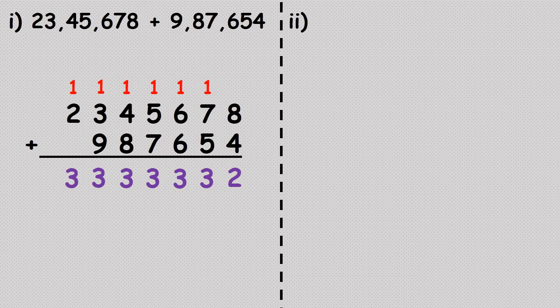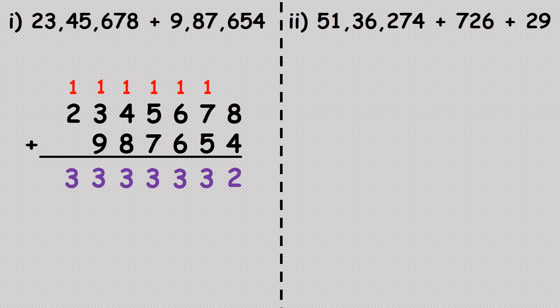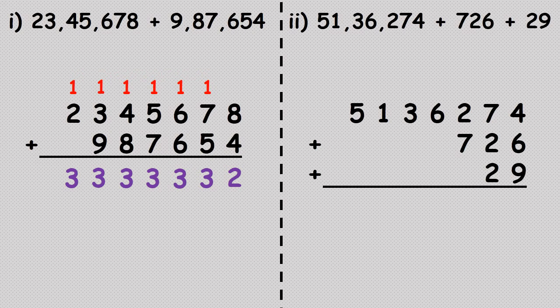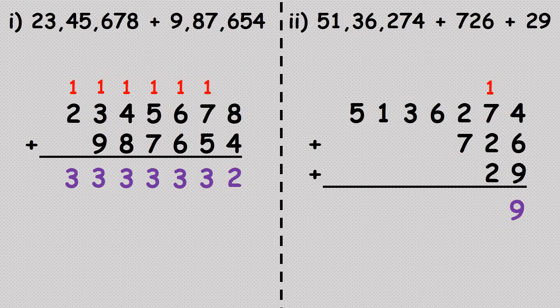Let us now try and add three numbers at a time. We will add fifty-one lakh thirty-six thousand two hundred and seventy-four, with seven hundred and twenty-six, and twenty-nine. First we arrange the numbers as per their place value. We add the numbers in the units place: four, six, and nine. Four plus six is ten, ten plus nine is nineteen — carry one, write nine in the units place.